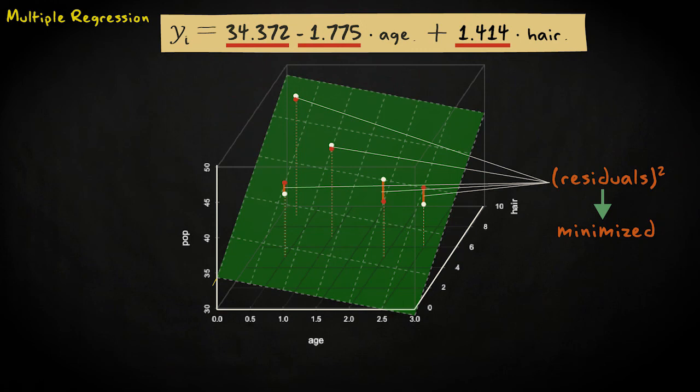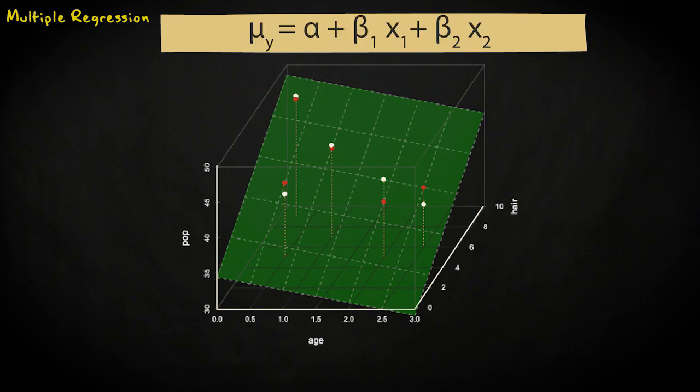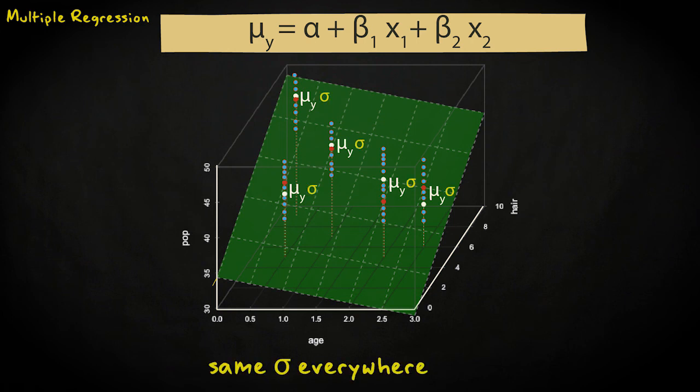At the population level, we model the means of the conditional distributions, mu sub y. For every point on the plane, for every combination of cat age and hairiness, we assume there is a distribution of popularity scores. The mean of this distribution lies on the plane. The standard deviations of all these conditional distributions are assumed to be identical. So the spread of observations around the plane is assumed to be the same everywhere.